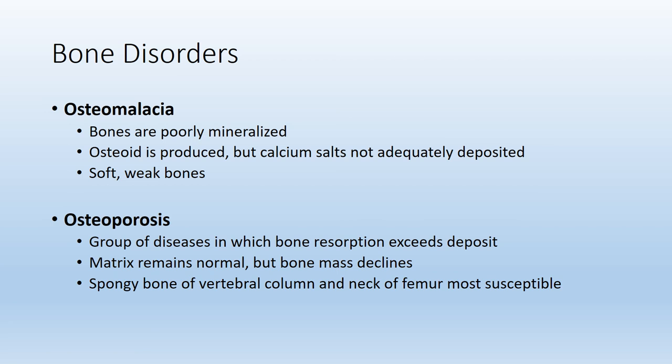Osteomalacia — think soft or malleable. In a patient with osteomalacia, the bones are soft and therefore weak. This is because the bones are poorly mineralized: they lack the calcium and phosphorus salts that contribute to hardness. The osteoblasts are laying down osteoid, but the calcium salts and phosphorus salts are not there to provide the hardness.